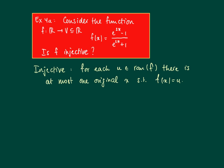So at most one original x such that f(x) = u. Well, we have several ways to check this. The first method is the following, which is handy many times.